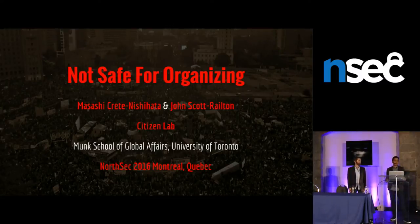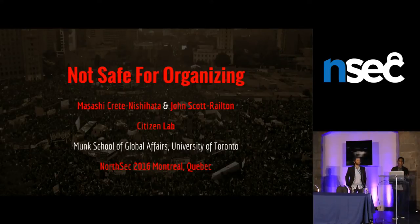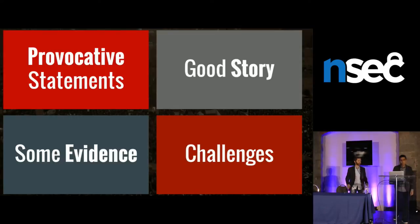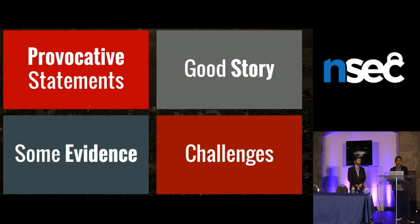We work on a variety of things, but one of the main research interests we have is trying to track and understand malware-enabled espionage campaigns targeting civil society. I use the language 'espionage campaign' on purpose, because the purpose of these operations is not to extract intellectual property and it's not financial gain. It is to collect sensitive information from groups doing political work that could threaten those in power. Over the next hour, we're going to break that down for you with some examples around the world in four ways: provocative statements about the state of attacks against civil society, a good story, evidence from case studies, and then zoom out to look at challenges for these groups and for information security professionals like everyone in this room.